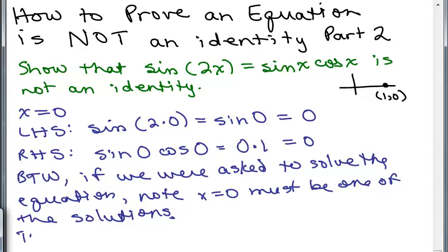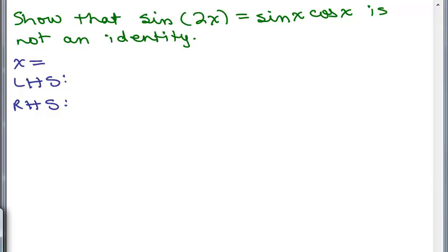This could get a little tricky if you want exact values, because you've got to pick something for x so that when you multiply it by 2, it's still one of your special angles — and you also want x itself to be a special angle. For instance, pi over 6 would work because pi over 6 and 2 times pi over 6 are both special angles. Or you might try pi over 4, because pi over 4 and 2 times pi over 4 also works. I'm going to try pi over 6.